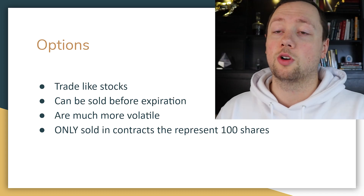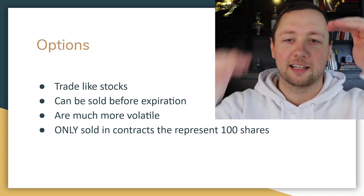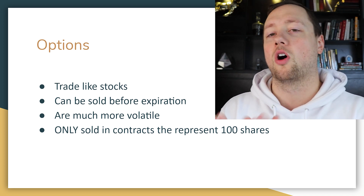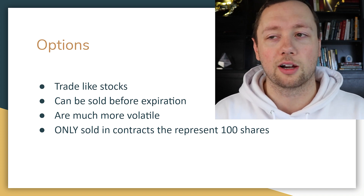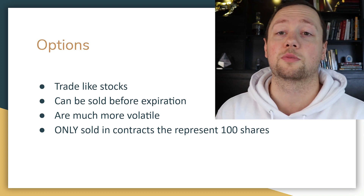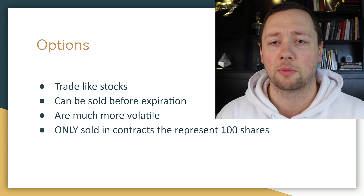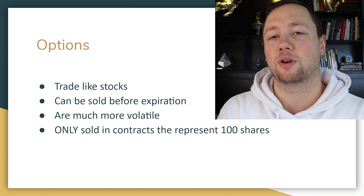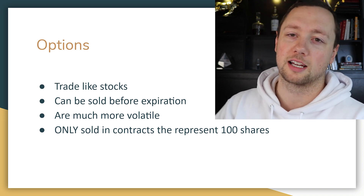Options do trade just like stocks — when a buyer has a price he wants to buy at and a seller has a price he wants to sell at, when those two levels meet, the transaction happens. Options do have usually less liquidity than stocks, so you need to be aware of that. They can be sold before expiration — you could have sold on the 19th, 18th, or 17th of November, and you would have got market price, which is usually representative of the same level of profit had you exercised the option.